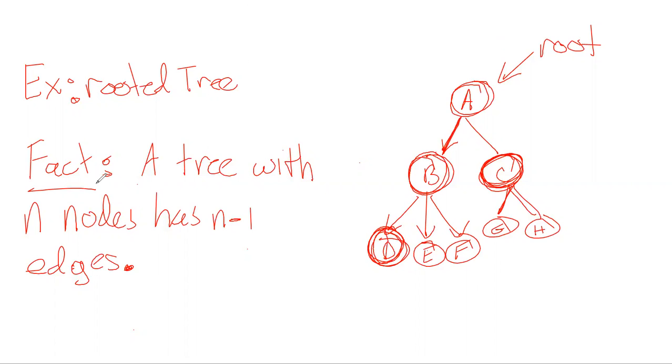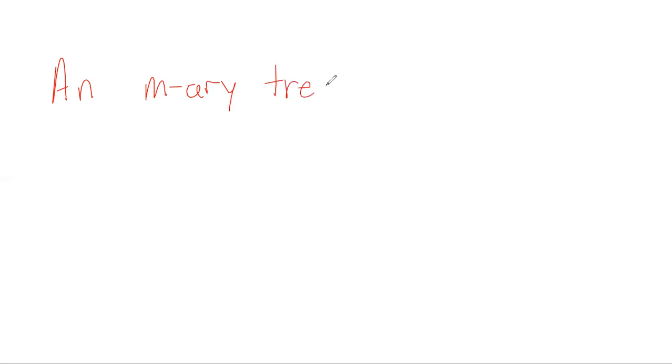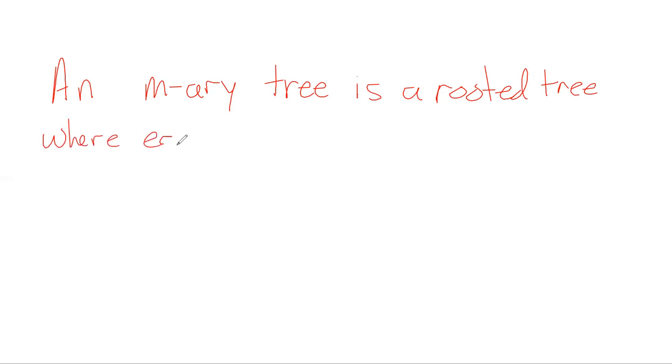We'll define an M-ary tree as a rooted tree where every node has at most M children nodes. So an M-ary tree simply means each node has at most M children.